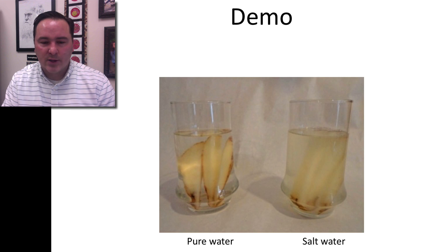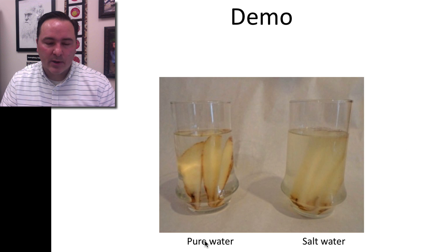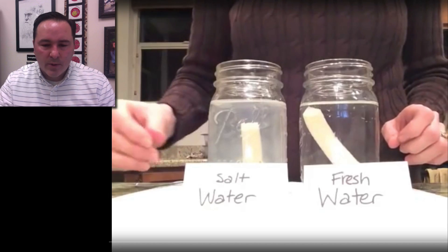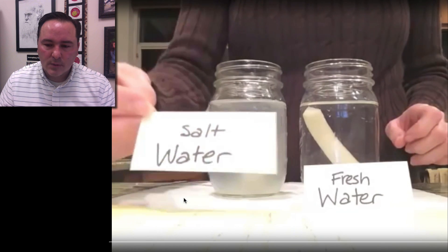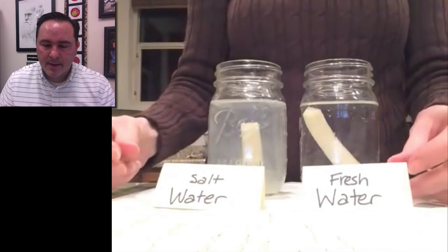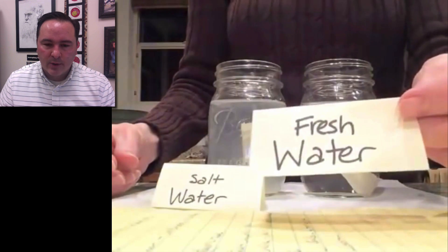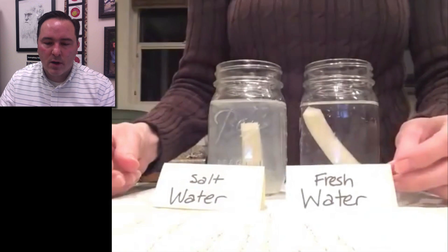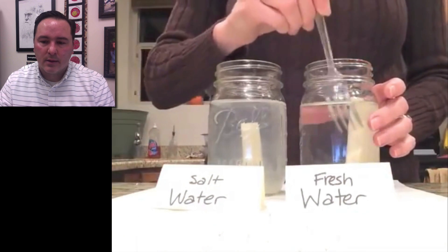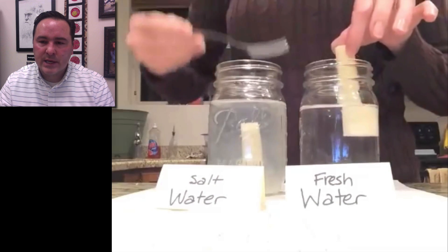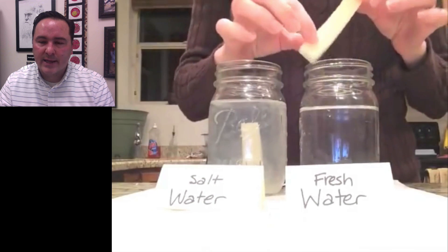To demonstrate this, we're going to look at potatoes in water. We're going to do an experiment where we look at potato slices in pure water and in salt water. We've got our salt water and we have our fresh water, and we let the potato slices soak for an hour. Now we're going to pull these out and see what the potato is like.